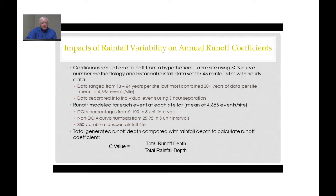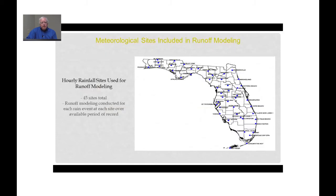The annual C value was then calculated as the total runoff depth generated over the 30-plus years of simulation divided by the total rainfall depth which occurred over the same period. The hourly sites used for the modeling are located throughout the state of Florida, fairly evenly spaced from the Panhandle down to Key West.